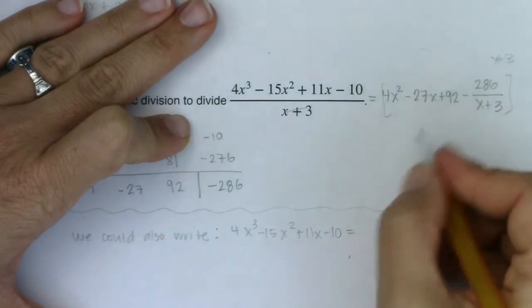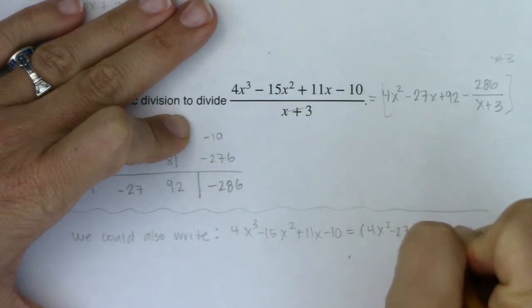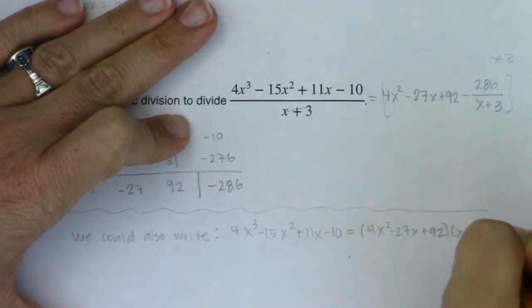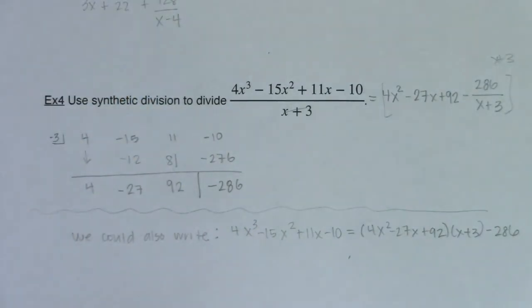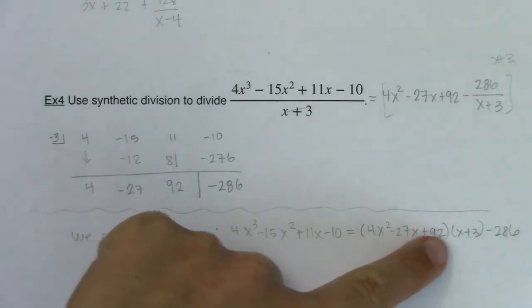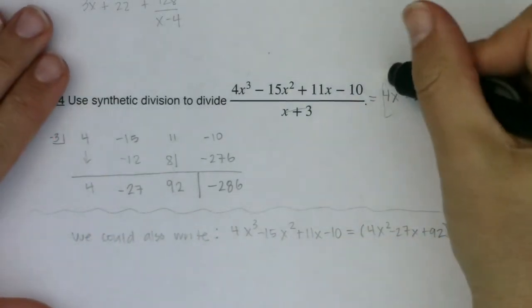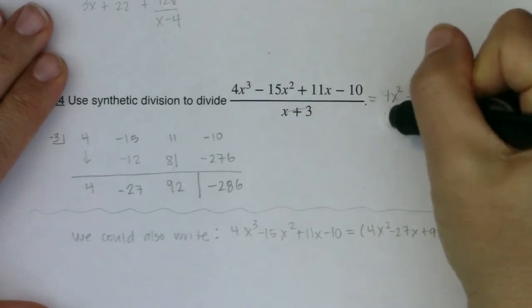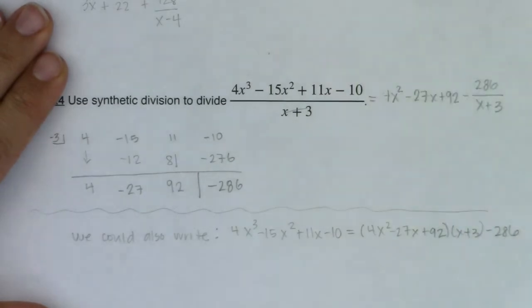But this term, when I multiply it, the denominators cancel and I just get 286. So you could write your solution that way. You could say your numerator is equal to your quotient times your divisor minus this remainder. I don't know if that's more helpful or more confusing. I just wanted you guys to see it, that you could write it a different way should you want to.